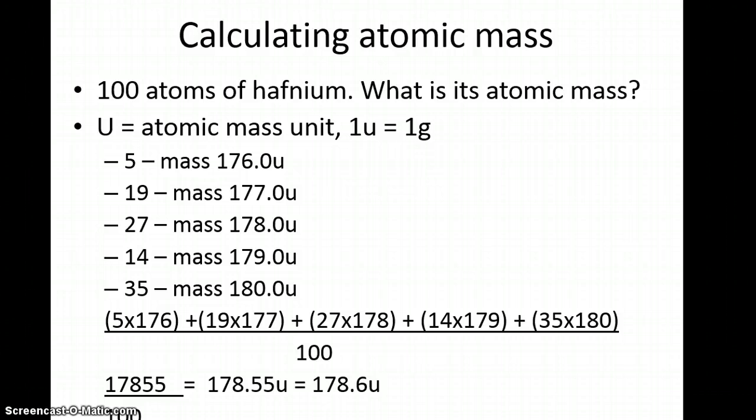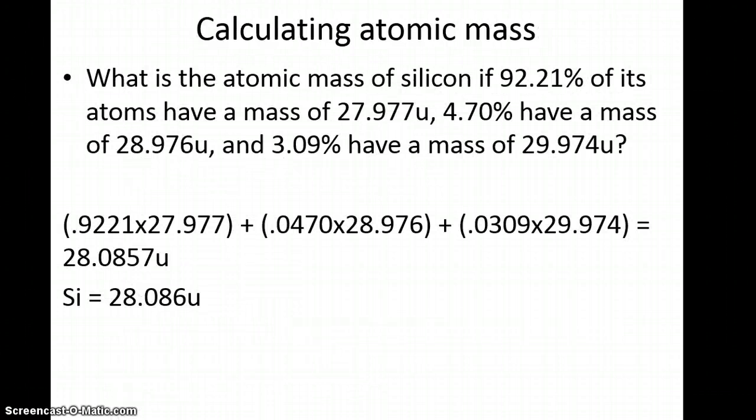Another way a problem could look is when you're given the percent of each isotope. What is the atomic mass of silicon if 92.21% of its atoms have a mass of 27.977u, 4.70% have a mass of 28.976u, and 3.09% have a mass of 29.974u?